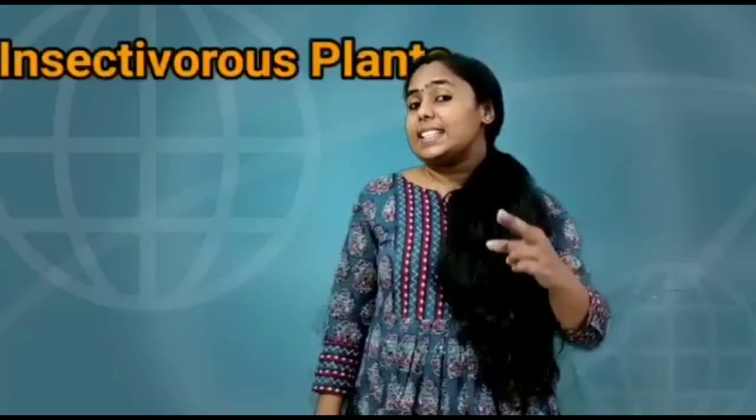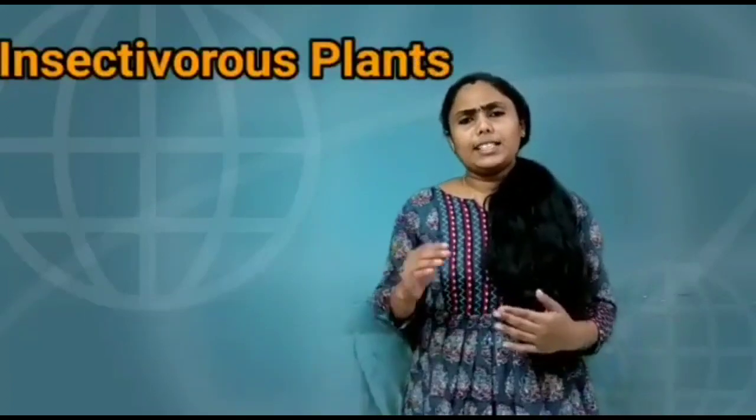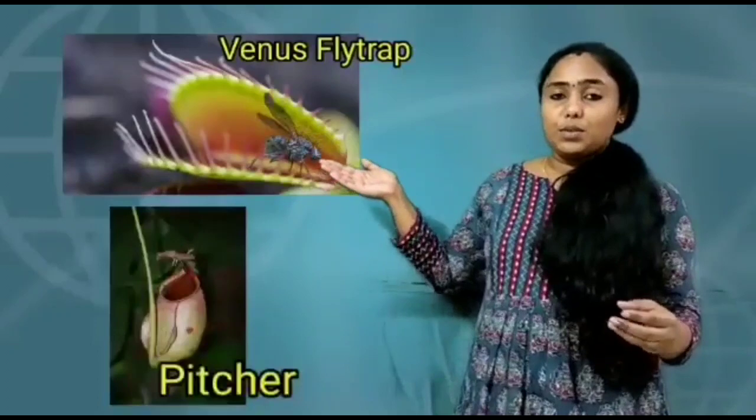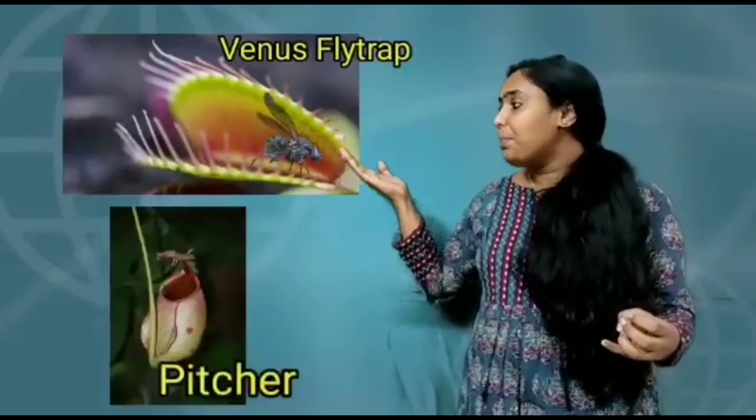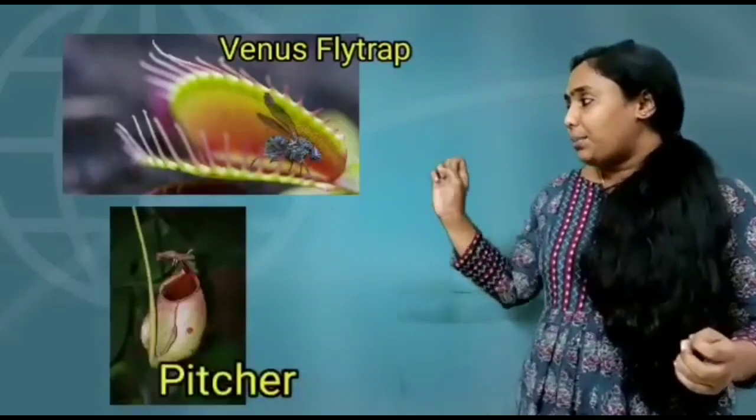They also grow on dried leaves. The next type is insectivorous plants. Insectivorous plants are plants which eat insects and get nutrients from them. They prepare their food from the insects they trap and eat. They also don't have pigments for food preparation and no photosynthesis takes place. Some examples of insectivorous plants are the Venus flytrap and pitcher plant, which trap insects.